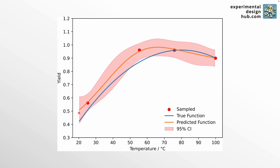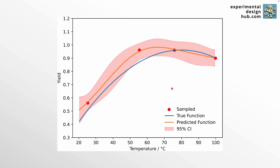The model tells you that probably the yield changes with increasing temperature like this — but it could also be like this or like this, somewhere within this uncertainty area. We're trying to find the maximum yield. Currently the model predicts the maximum yield somewhere around here — that's not bad, but slightly off. And this is where the uncertainty becomes important.